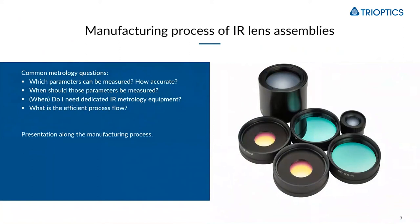If we look at the manufacturing process of IR lens assemblies, very common metrology questions come up: Which parameters can be measured? How accurately can these parameters be measured? When within the manufacturing process should we measure and control these parameters? Do I need dedicated IR metrology for this, or can this be solved with other techniques? And what is the typical efficient process flow?